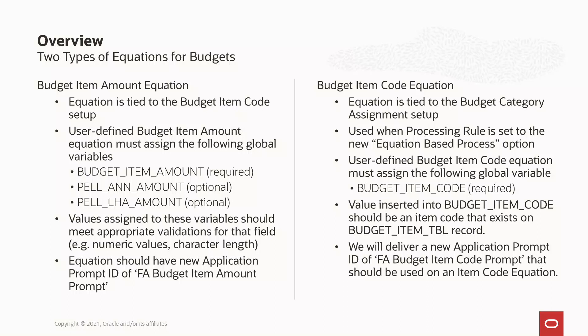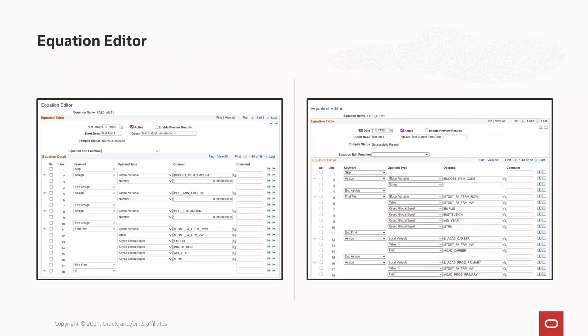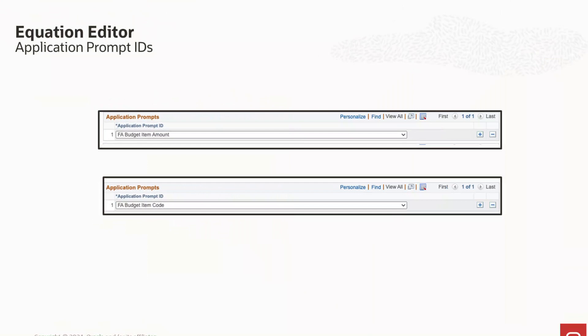The second type of equation is a budget item code equation. This equation is associated to the budget category assignment setup. We'll review the setup changes for these options in a few moments in this video. The equations that can now be used as a part of your budget build process are all user-defined. You will create your equations using the SIA's equation engine functionality. We've delivered two new application prompt IDs to use for FA budgets: FA budget item amount and FA budget item code.